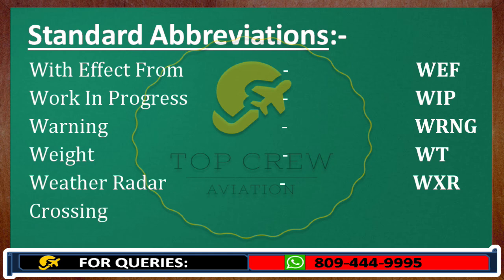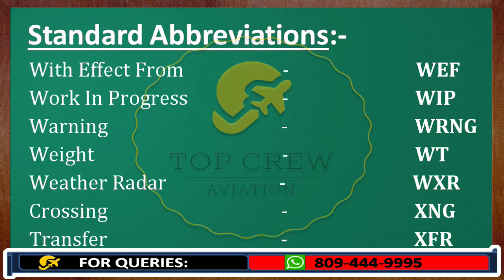Crossing: XNG. Transfer: XFR. That's it guys — these are the most useful abbreviations which we are going to use while learning how to make calls. The rest of the important ones we would discuss while making calls. These are very important; once you are perfect at writing the short forms of these full forms, it would really help you reduce your time and increase your speed while transmission and writing.